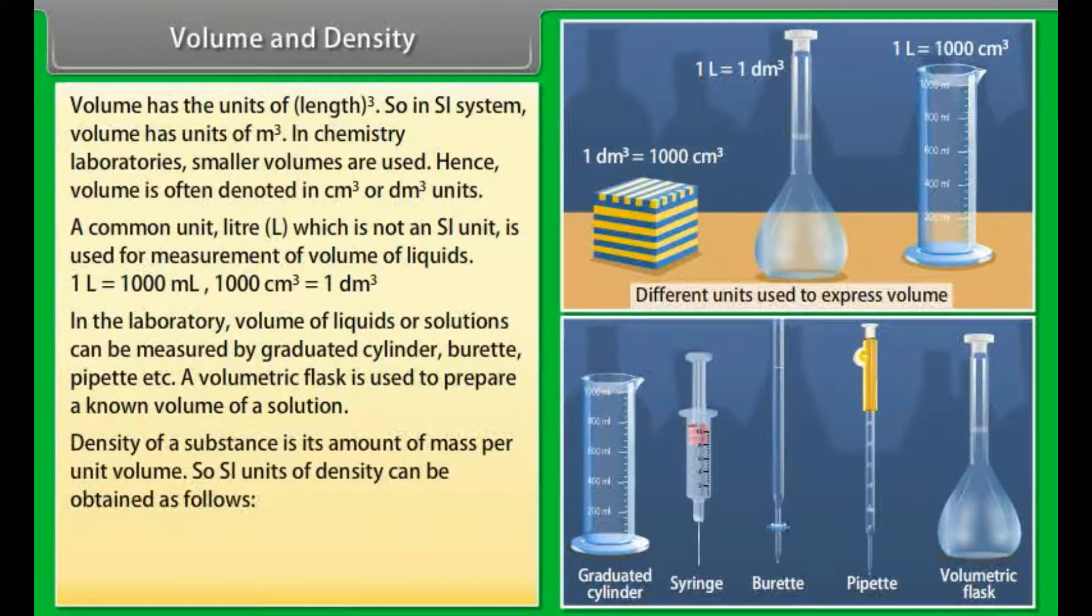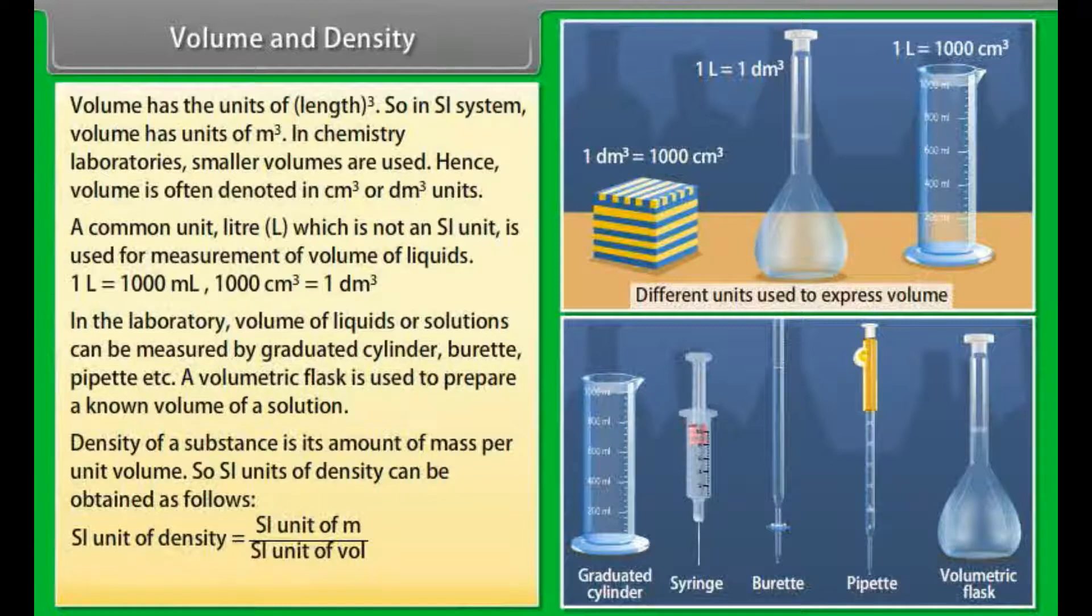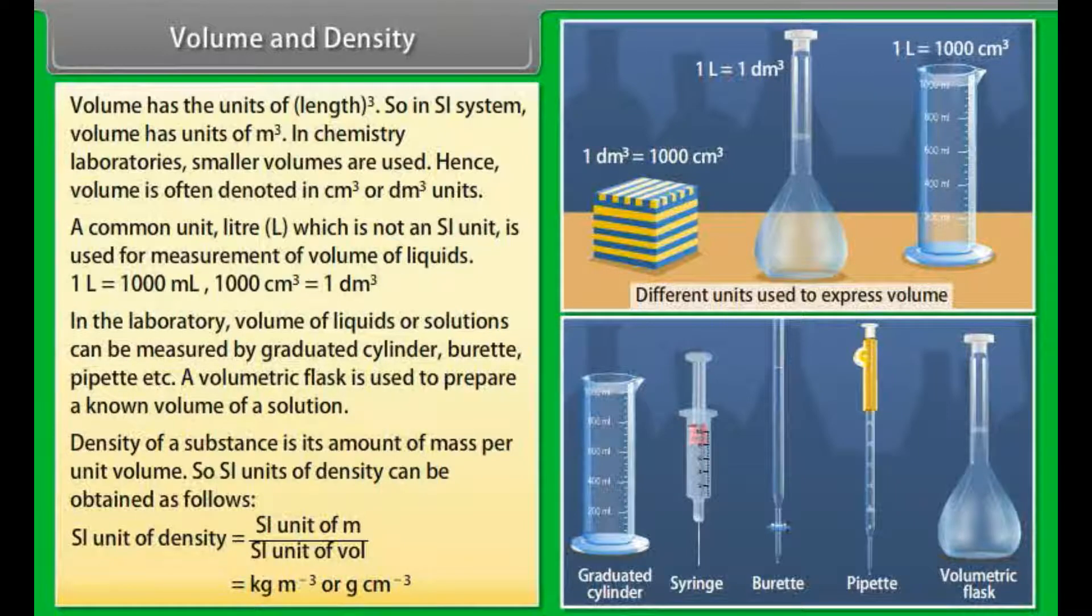Density of a substance is its amount of mass per unit volume. So, SI units of density can be obtained as follows: SI unit of density equals SI unit of mass upon SI unit of volume, which equals kg·m⁻³ or g·cm⁻³.